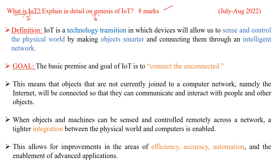For what is IoT, you can focus on the definition and the goal of IoT. IoT can be defined as a technology transition in which devices will allow us to sense and control the physical world by making objects smarter and connecting them through an intelligent network.